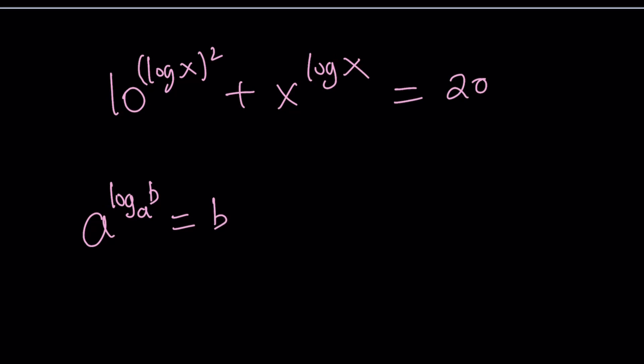If you have a to the power log b with base a, then this is equal to b. Make sense? In other words, these two bases cancel out. They're both bases, right?